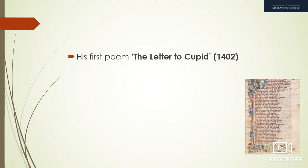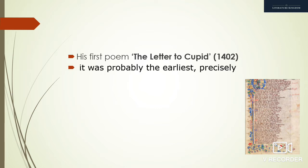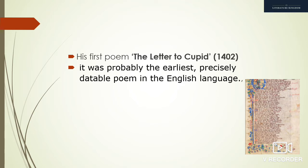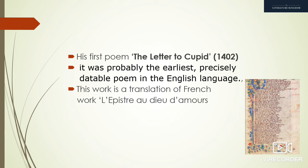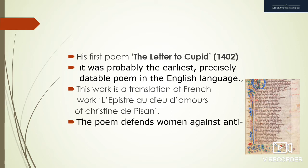His first poem, 'The Letter to Cupid,' written in 1402, was probably the earliest precisely datable poem in the English language. This work is a translation of the French work 'L'Épistre au Dieu d'Amours' by Christine de Pisan. The poem defends women against anti-female satire and attacks by men.